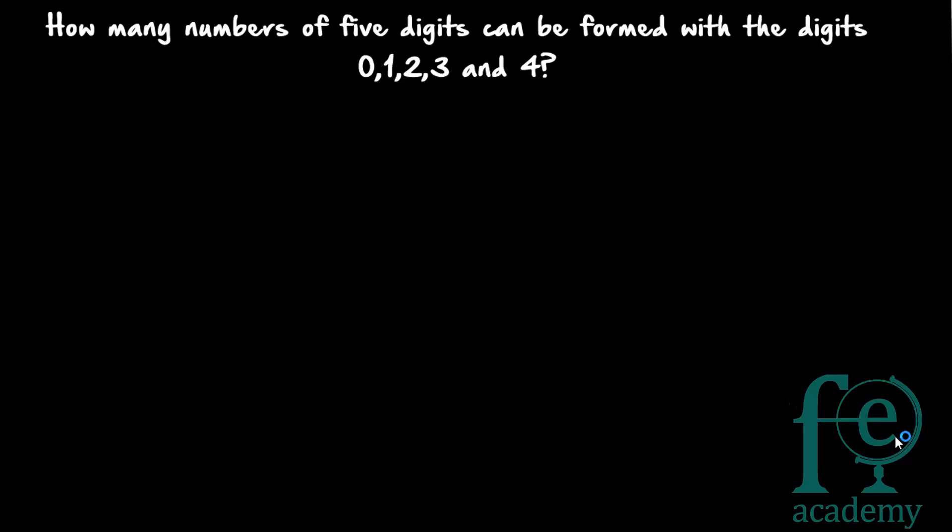Hi friends, welcome to today's class. So today's question is: how many numbers of 5 digits can be formed with the digits 0, 1, 2, 3 and 4? So there are two cases for these kind of questions.